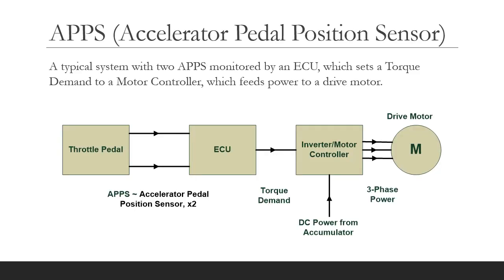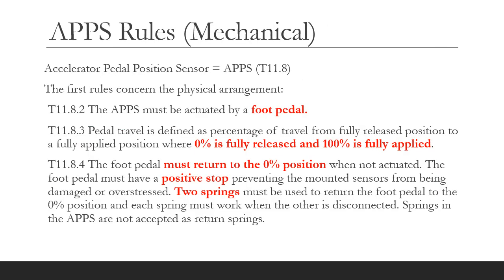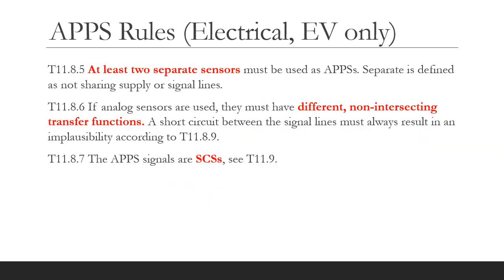The APPS is the accelerator pedal position sensor, typically a potentiometer, and there are a minimum of two in the system. Shown is a typical system with two APPS monitored by a controller VCU, which sets a torque demand to an inverter or motor controller feeding a drivetrain motor. The first few rules concern the mechanical arrangement: it needs to be operated by a foot pedal, the range of travel is defined as 0 to 100 percent, the foot pedal must return to zero position when not actuated, you need a positive stop to prevent damage to the APPS, and two throttle springs to pull the pedal back. On the electrical side, there must be at least two sensors with different non-intersecting transfer functions, and the APPS system is defined as safety critical.